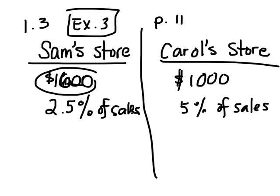So Sam's initial amount is greater, but his commission is less, and then in Carol Store the initial amount is lower, but then you get more commission. So you get $1,000 for the month, plus you get 5% of your sales. So we need to come up with two equations. We're using the variables E for earnings and S for sales.